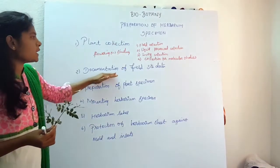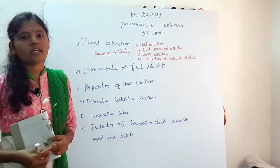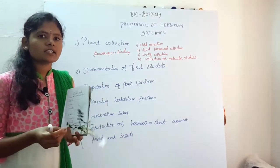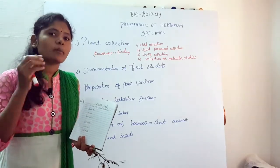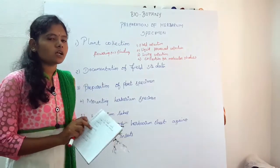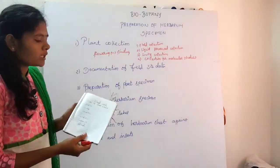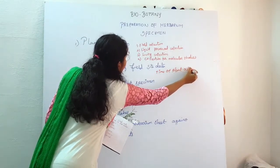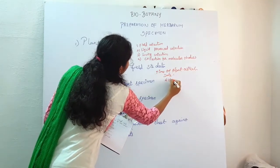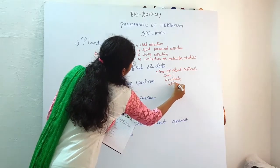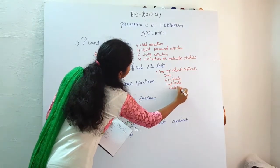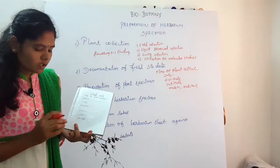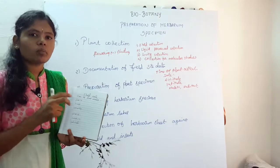Second, documentation of field site data. When you collect a plant, you will write a field note. You will record the time of plant collection, the date, altitude, latitude, habit and habitat. You must also note the locality, state, and country in this field note. This information will then be transferred to the herbarium label, so a field note is compulsory.